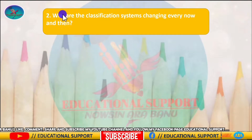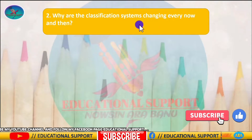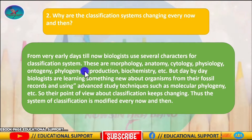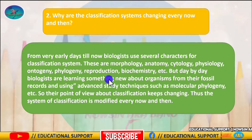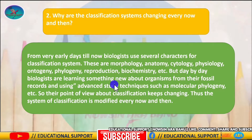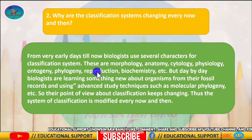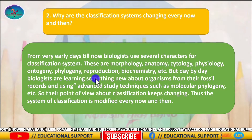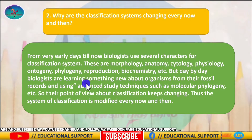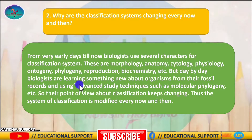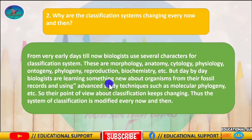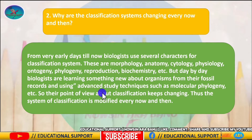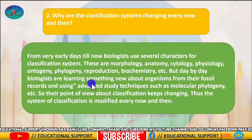The next question is: why are classification systems changing every now and then? Scientific studies are always a work in progress and new species and organisms are often added. The initial system of classification focused only on habit and habitat of organisms. Gradually, external morphology became a tool for classification. After this, morphology and embryology were taken into account, followed by phylogenetic relationships and the cytology of the organism. Modern classification uses biochemical techniques based on nucleic acid components.